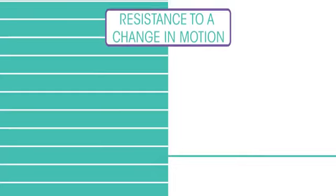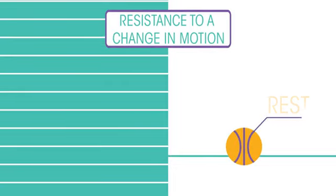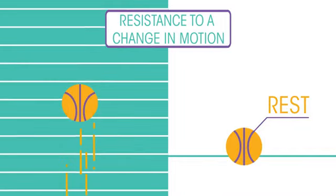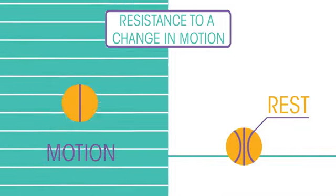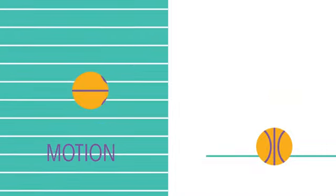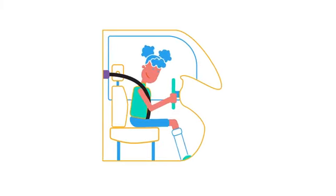Inertia is the resistance to a change in motion. So an object at rest remains at rest and an object in motion remains in motion with the same velocity unless acted upon by an unbalanced force.